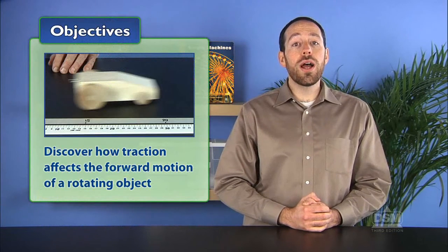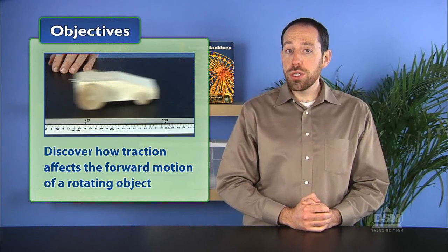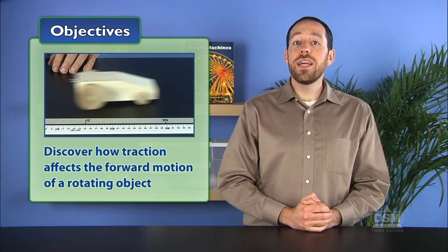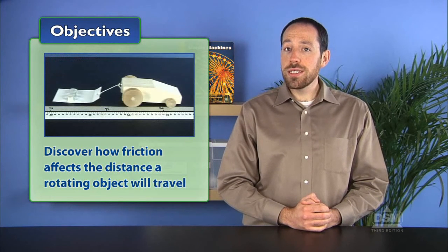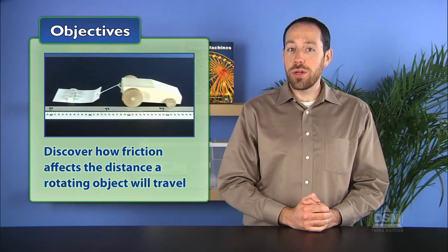In Activity Six, Tractor Traction, students experiment with traction and friction. Students first discover how traction affects the forward motion of a rotating object and then investigate how friction affects the distance a rotating object will travel.